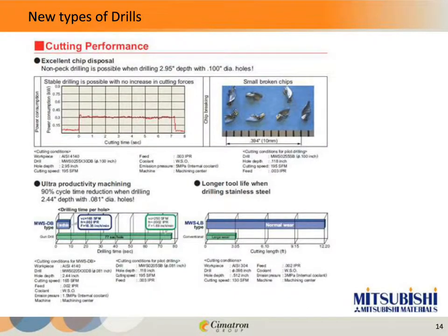On this slide, we're looking at cutting performance. We're showing that non-peck drilling is possible when drilling three inches deep with a hundred-thousandths diameter drill, with speeds and feeds shown below. There's also a comparison of this type of drill versus a one-flute gun drill. With the two-fluted carbide drill, the hole is processed in about eight seconds, whereas the gun drill processed the same hole in 77 seconds — quite a bit faster. I wish I had a third bar graph showing how long that hole would take with a high-speed steel drill and pecking, but I think you all have a good idea how much longer that would be.